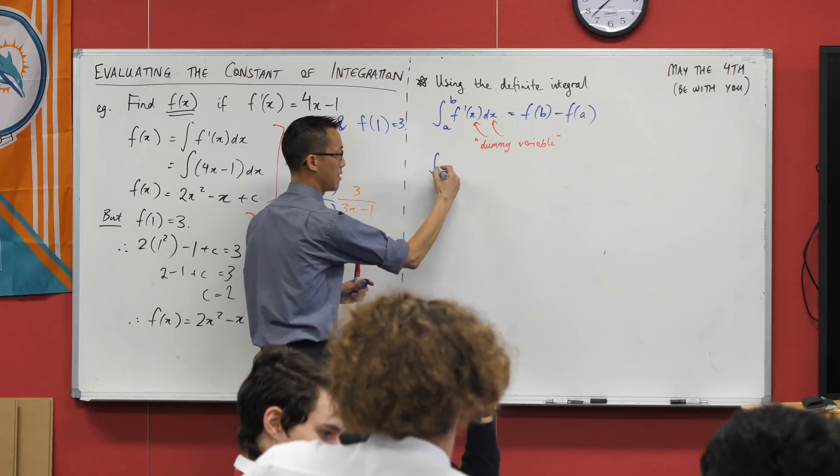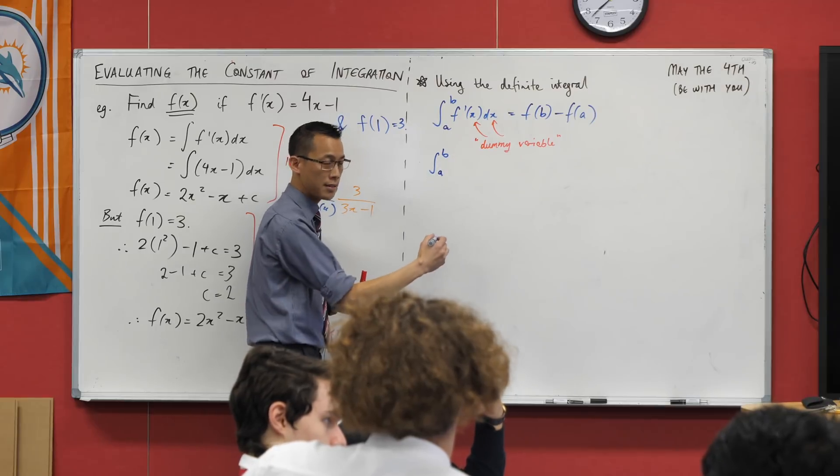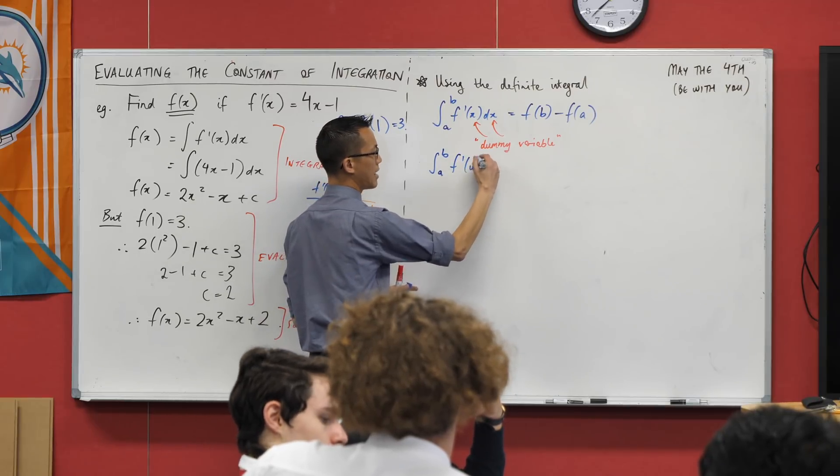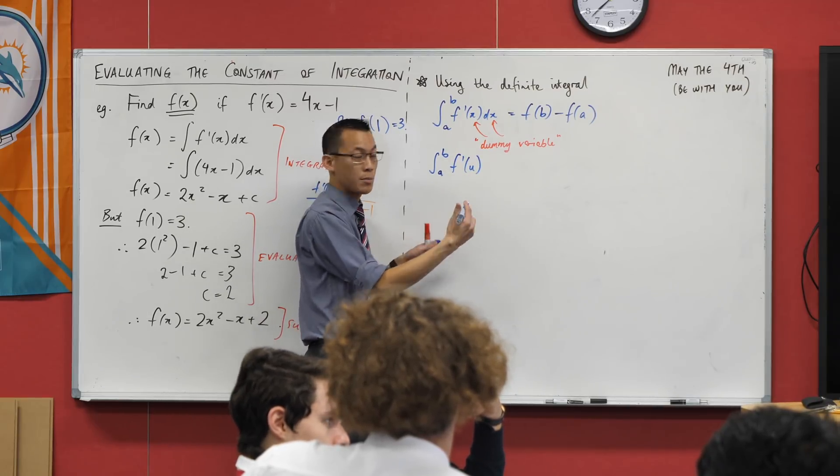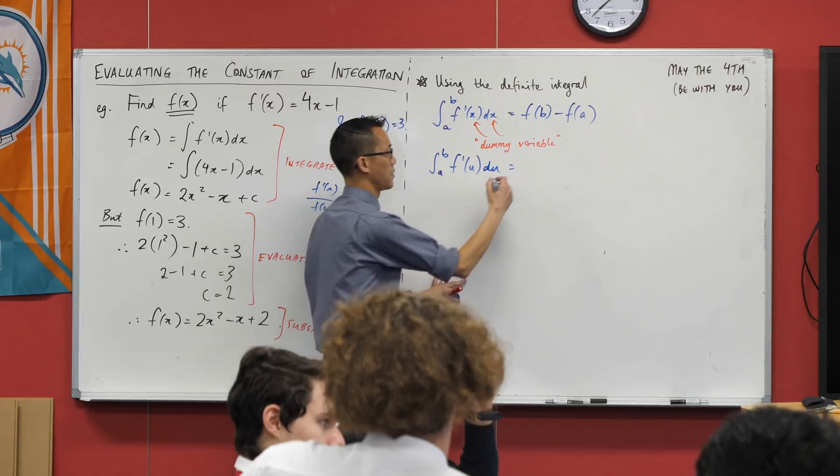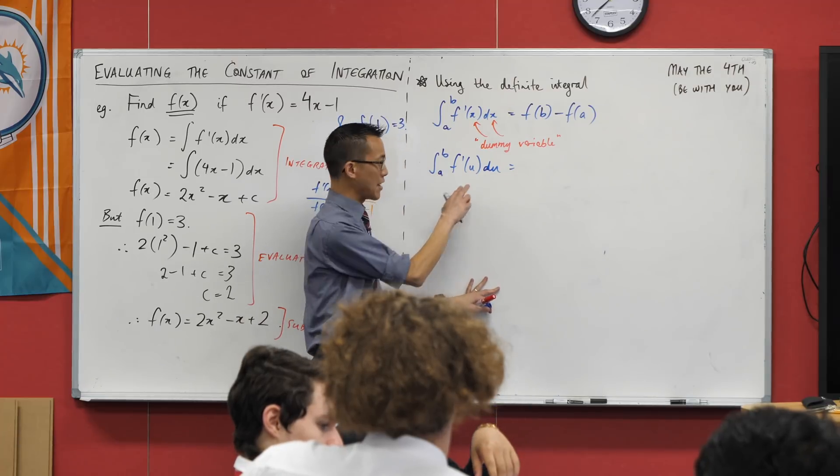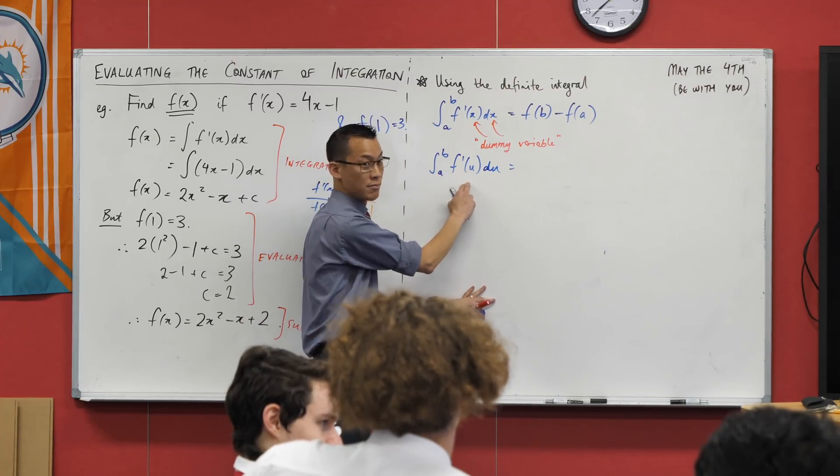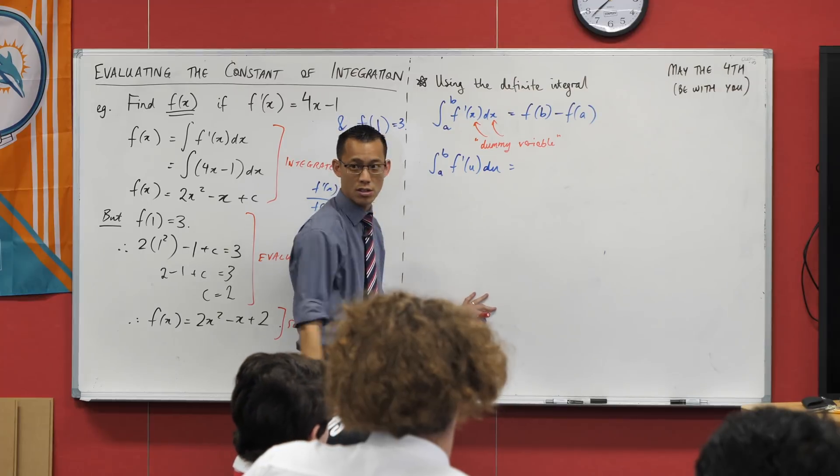So therefore, just stay with me. What I'm gonna do is I'm just gonna rewrite this line like so, a to b, and instead I'm just gonna put a different variable in there, a different dummy variable. I'm gonna use u because that's a traditional letter we use when we're substituting things. Tell me, if I change this on the left hand side, not a trick question, what changes in the right hand side?